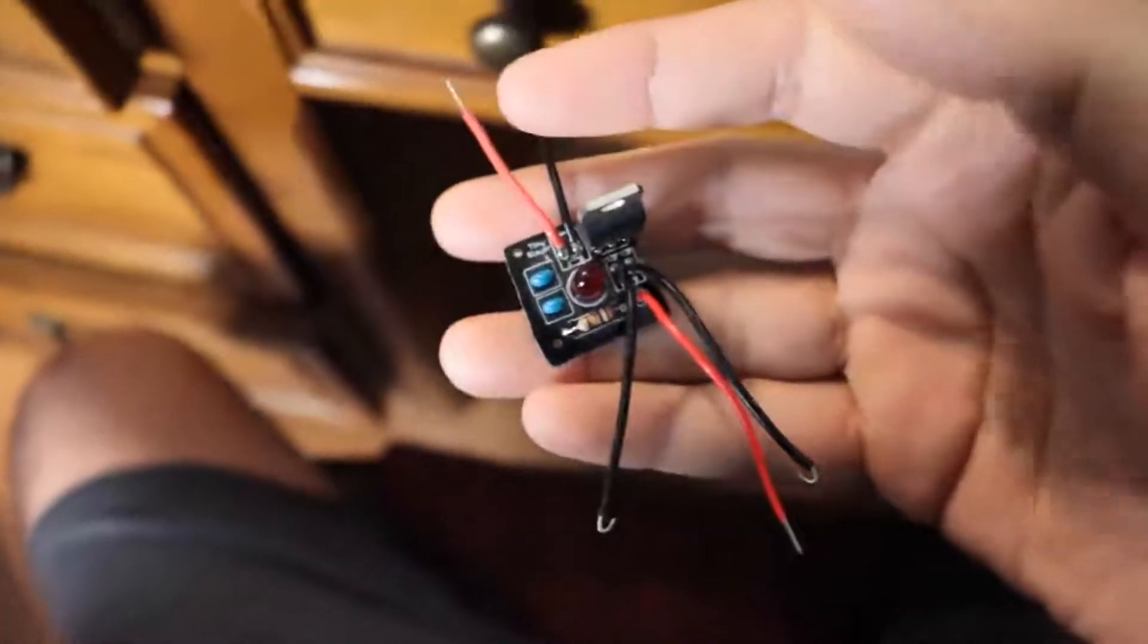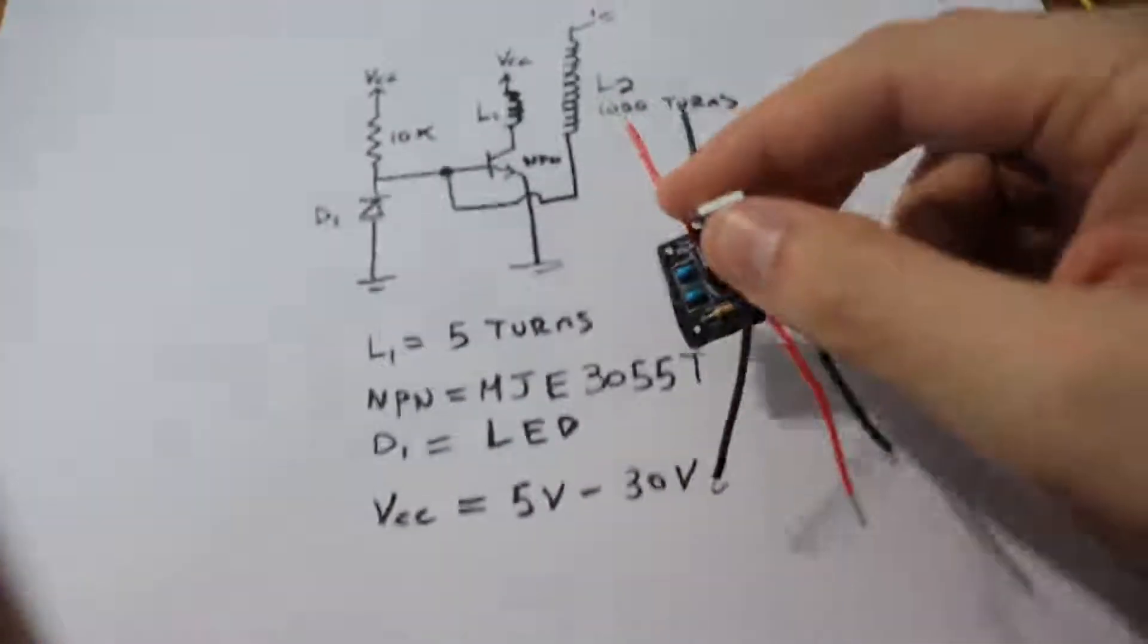So this is the schematic that I followed to make this little board. Now let's make the final connections to the coils and see how it looks.